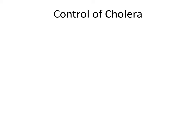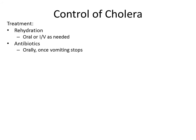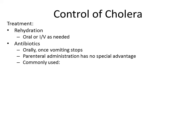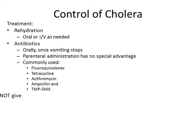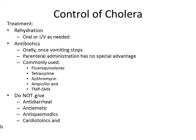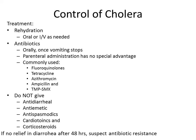Treatment includes rehydration — oral in mild cases and intravenous if severely dehydrated. Antibiotics are given orally after vomiting stops; parenteral administration has shown no special advantage in cholera. Commonly used antibiotics are fluoroquinolones, tetracycline, azithromycin, ampicillin, and trimethoprim-sulfamethoxazole combination. Anti-diarrheal, anti-emetic, and anti-spasmodic agents are not to be given, nor are cardiotonics and corticosteroids. If no relief in diarrhea occurs after 2 days of antibiotic treatment, antibiotic resistance is suspected.